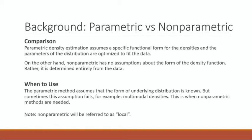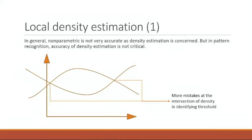A quick note: nonparametric will be referred to as local throughout this section — so local density estimation. In general, nonparametric isn't very accurate, but in pattern recognition, accuracy of density is not critical. More mistakes are made at the intersection of densities, which makes it harder to classify, but again, accuracy of density estimation is not critical.